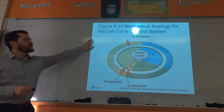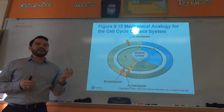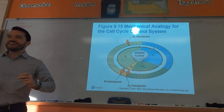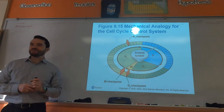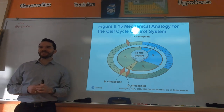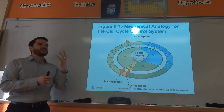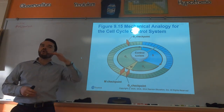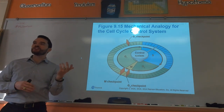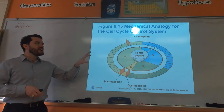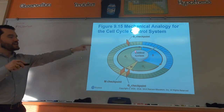Think of cell cycle control like a washing machine or dishwasher — there are sensors that tell it when to go through the different phases. The cell cycle has similar checkpoints. There are three main checkpoints: the G1 checkpoint, the G2 checkpoint, and the M checkpoint.